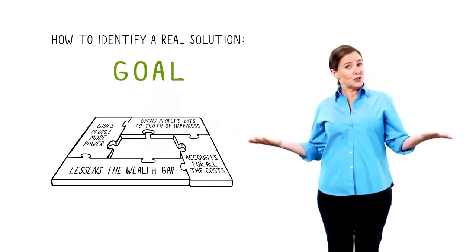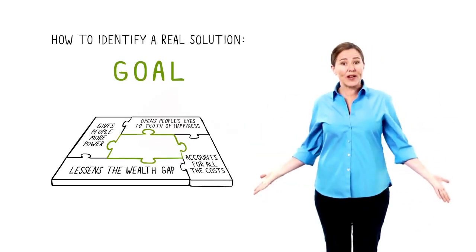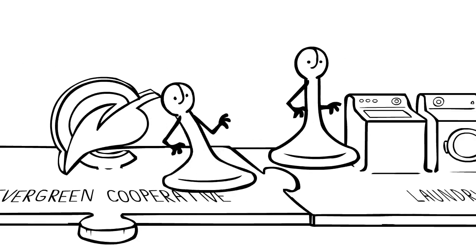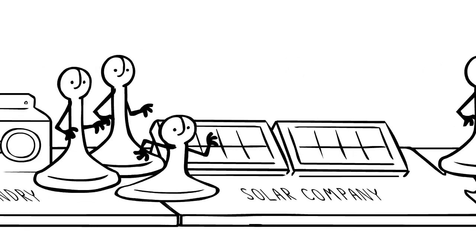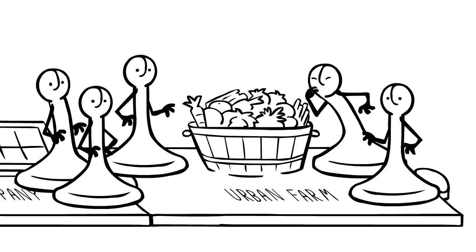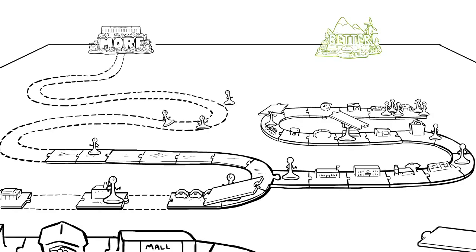When I see a solution that does all that or can be redesigned to, I'm in. And they're popping up everywhere. Like the Evergreen Cooperatives in Cleveland, where worker-owners are running green businesses: a laundry, a solar company, and a super-productive urban farm that are healthy and safe. They provide secure jobs to people that the old game has left behind.